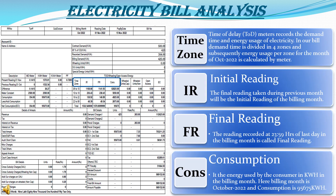In this bill, we will discuss the following terms: time zone, IR, FR and consumption. The time zone refers to the time of day recorded in the meter, which records the demand time and energy usage of electricity. The demand time is divided into four zones: 6 to 10, 10 to 18, 18 to 22, and 22 to 6. Energy usage per zone for the month of October 2022 is calculated by the meter and attached in the electricity bill.